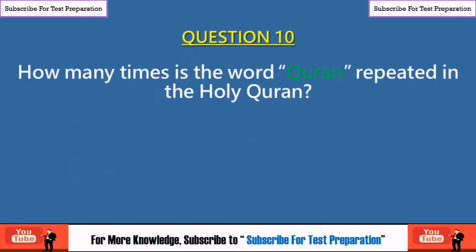Question 10: How many times is the word 'Quran' repeated in the Holy Quran? 72, 69, 71, or 70? The right answer is 70.